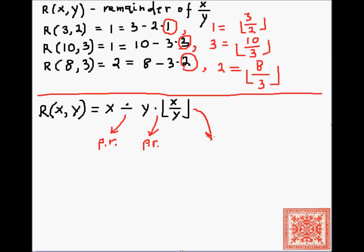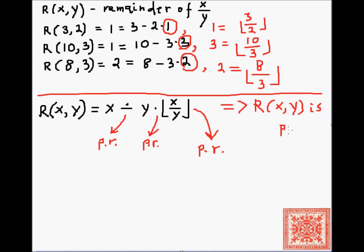The multiplication is also primitive recursive. The floor was shown to be primitive recursive through bounded minimization in the previous screencast. By one of the theorems we have proved, since the remainder of x and y is obtained from the primitive recursive functions by composition, it is itself a primitive recursive function.